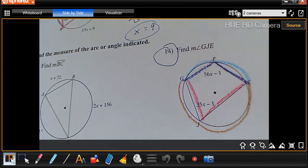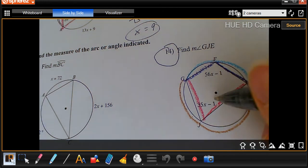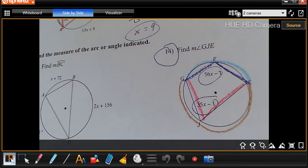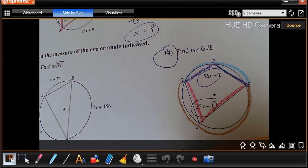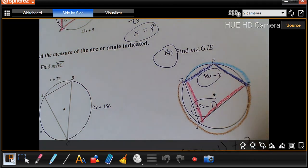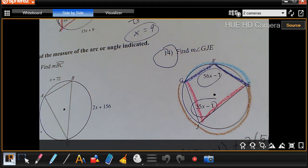So if I just multiply these by 2, I can add them together to give me 360. So I'm going to say 2 times 35X minus 1 plus 2 times 56X minus 1 equals 360.